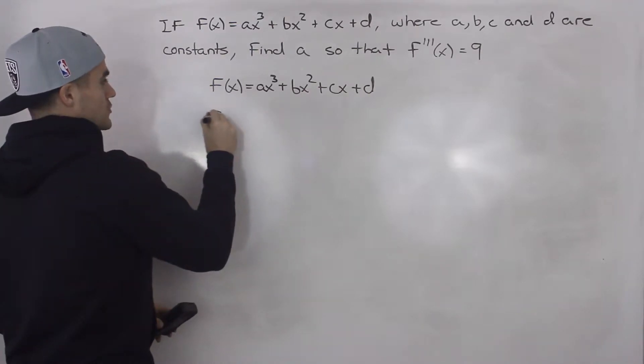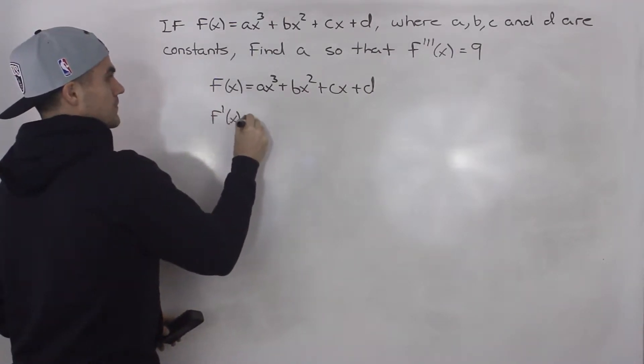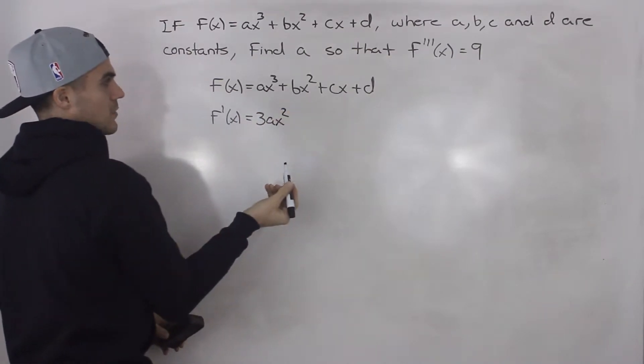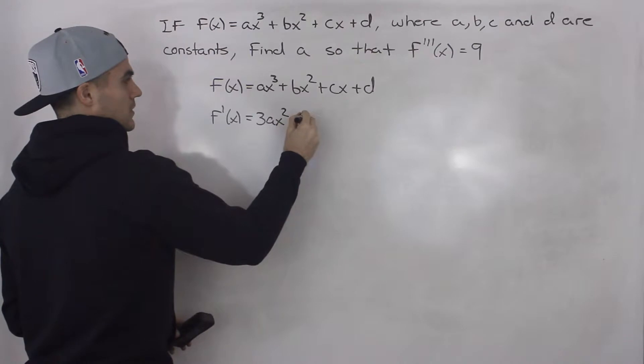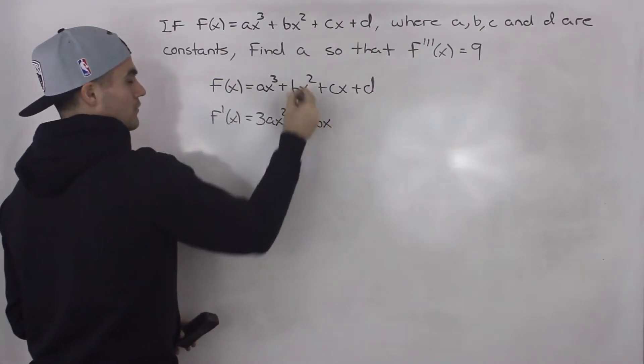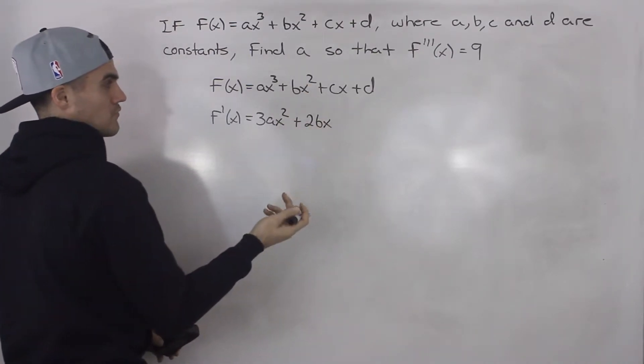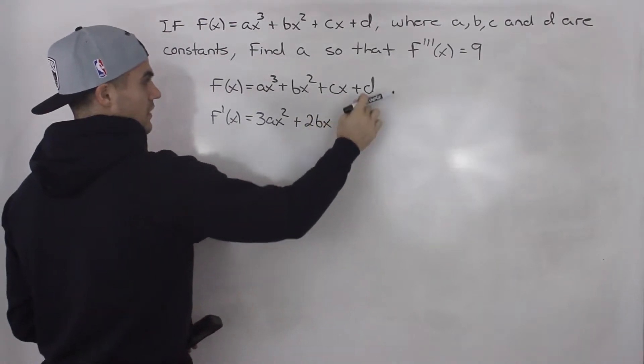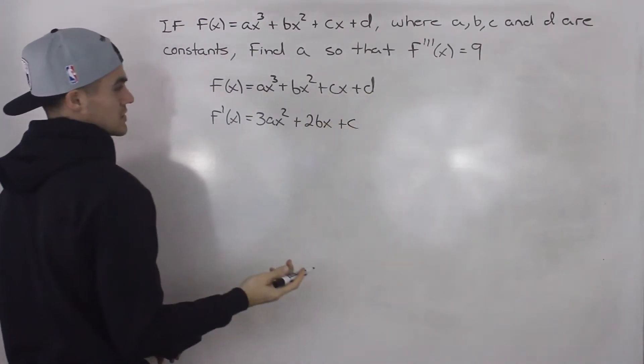So what would the first derivative of the function be? Well, we would bring the exponent down for this first expression, then subtract 1 from the exponent. Bring this exponent down, subtract 1 from the exponent, so it's just x to the power of 1. The derivative of cx is just c, and then the derivative of a constant is just 0.